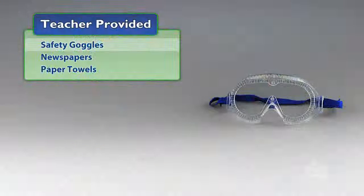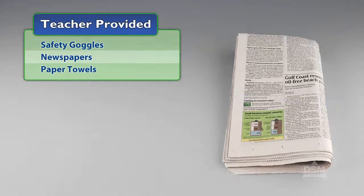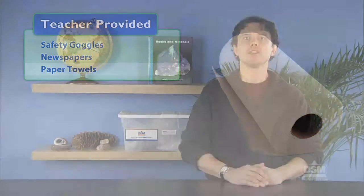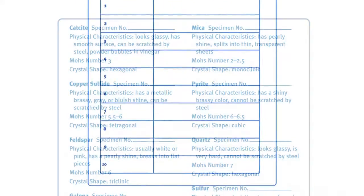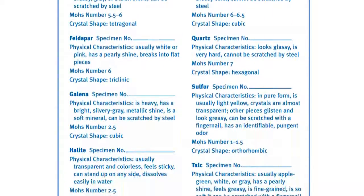You will also need to provide safety goggles, newspapers, and paper towels. To prepare for session one, make a copy of activity sheet six and the mineral data sheet for each student. Make sure to have the rock guide on hand for reference.